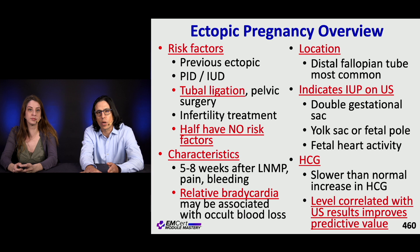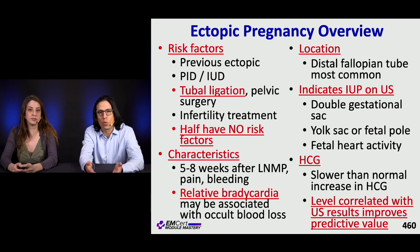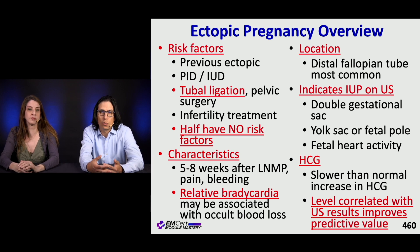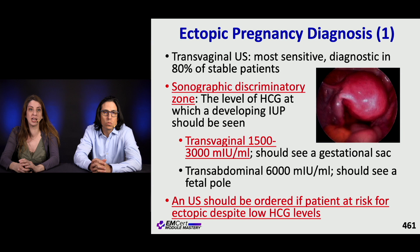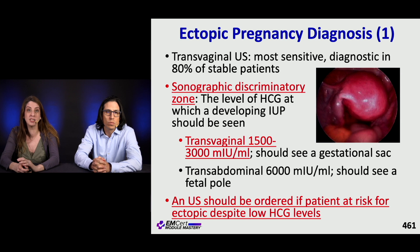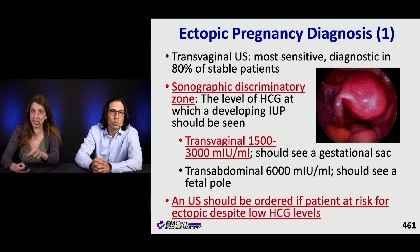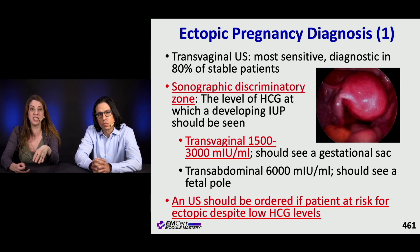Heterotopic pregnancy can occur in the case of fertility treatments. The HCG rise with an ectopic pregnancy is slower than expected in an intrauterine pregnancy, and correlating HCG levels with ultrasound results improves the predictive value of both tests. Transvaginal ultrasound is your imaging modality of choice for ectopic, diagnostic in about 80% of stable patients. The sonographic discriminatory zone is the HCG level corresponding to a developing IUP — on transvaginal ultrasound, that's about 1,500 to 3,000, at which point you should see a gestational sac.